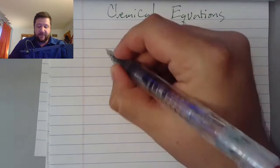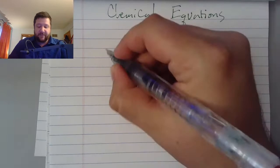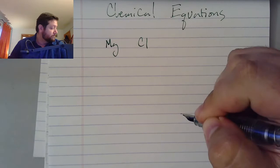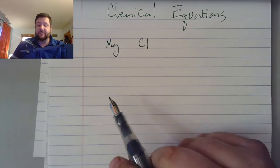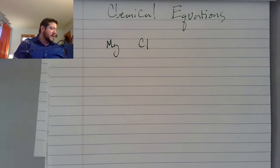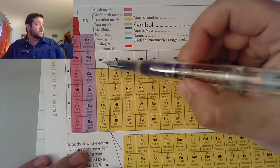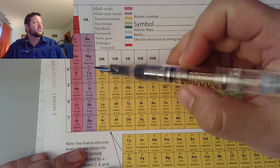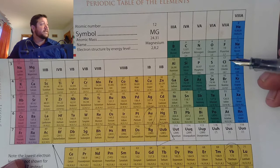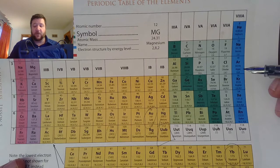Today we're going to start off with a little bit of review. If I have Mg and Cl, how many valence electrons do each of these have? If we pull up your periodic table, Mg is over here and you notice this is an alkali earth metal, column 2A, so two valence electrons. Cl is a halogen, that's got seven valence electrons because it's in 7A, and it's one away from being full.